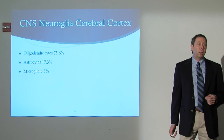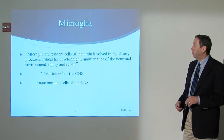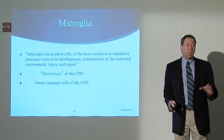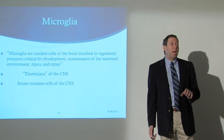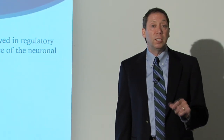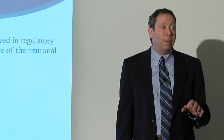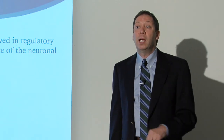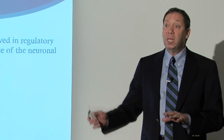Then we have the microglia, which constitute about 6.5 percent of all glia cells. The microglia are amazing little creatures — resident cells of the brain involved in regulatory processes critical for development, maintenance of the normal neuronal environment, and injury and repair. They are the electricians of the central nervous system and part of the innate immune system. Microglia exist between neurons, sitting in a sentinel state, monitoring their region, trimming senescent dendrites, and making sure the anatomy stays functional.